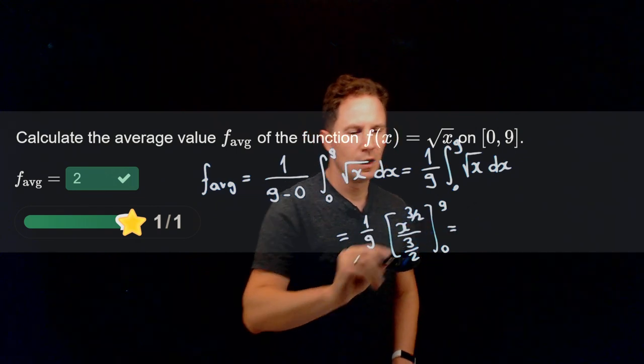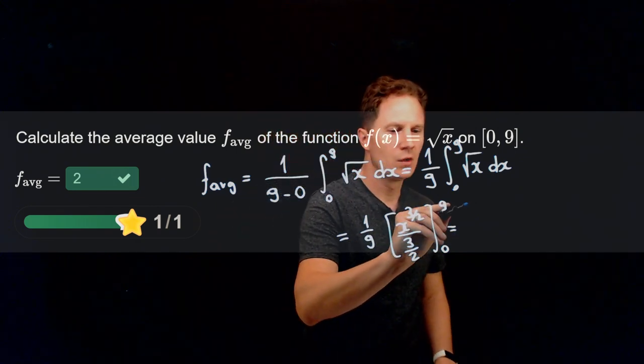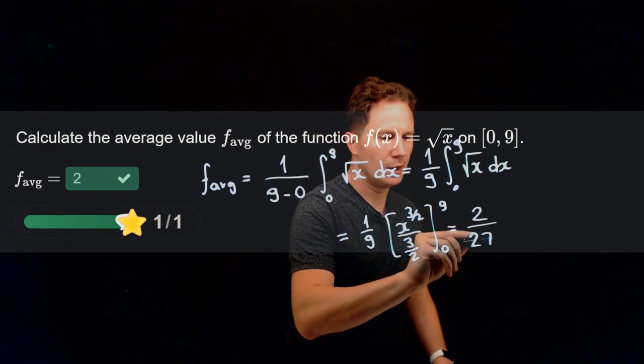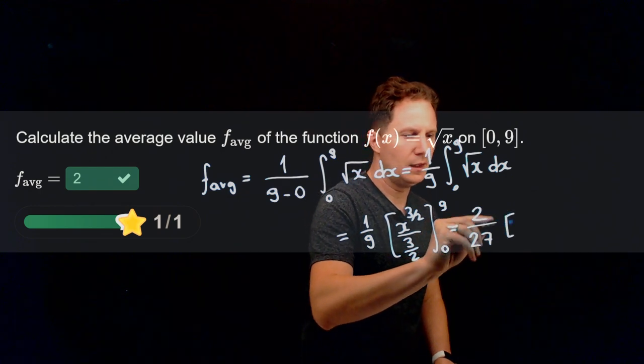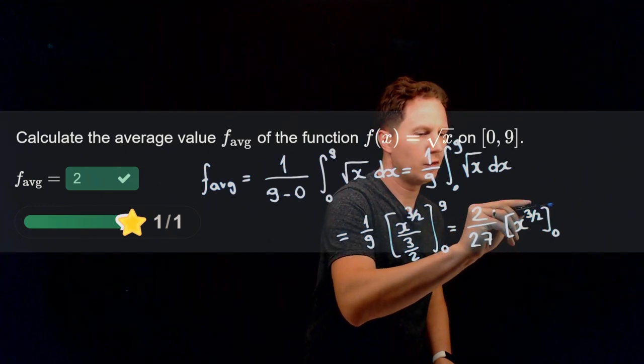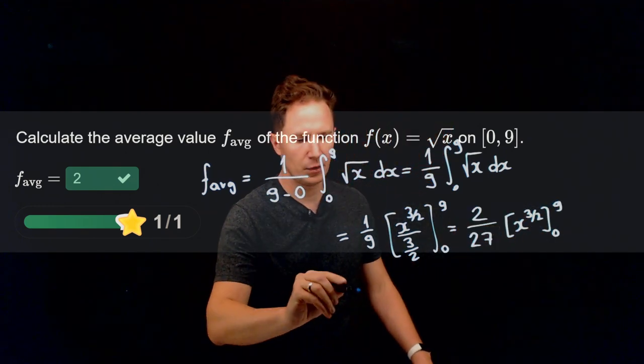We need to consider this factor of 2 thirds we could factor out, and then we are left with 2 over 27, and the net change of x to the 3 halves as x changes from 0 to 9 is what we need to consider.